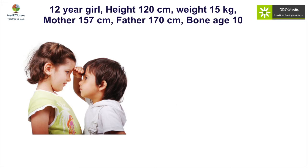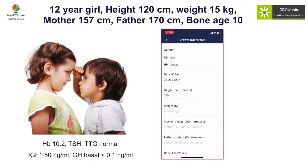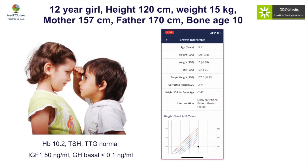Now if we use the second situation — a 12-year-old girl whose height was 120 and weight was 15 — she was found to have normal thyroid and TSH, mildly low hemoglobin, low IGF-1 and low growth hormone basally, based on which a growth hormone deficiency was diagnosed. But if we put the data in our growth interpreter, we see that the height is 120 but the weight seems to be more affected, and we'll interpret this using mid-parental height and a bone age of 10 years.